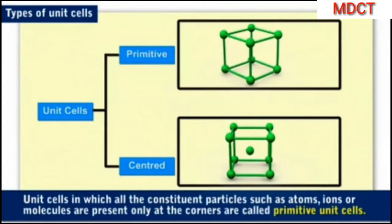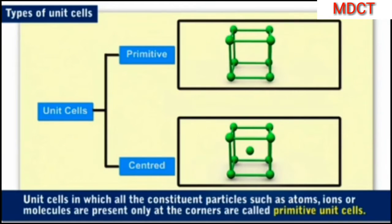Unit cells in which all the constituent particles such as atoms, ions, or molecules are present only at the corners are called primitive unit cells.